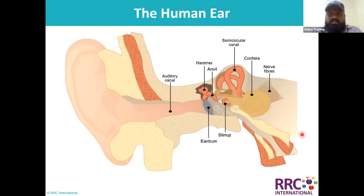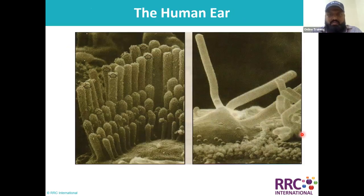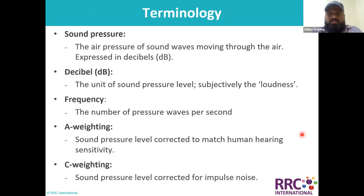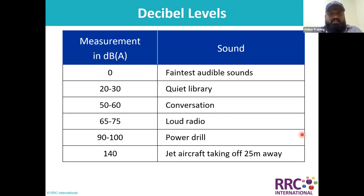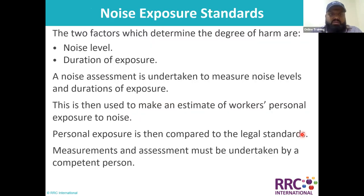We had seen how our sense of hearing works and how it gets damaged. Then we discussed different terminologies including sound pressure, decibel, frequency, A-weighting and C-weighting which is impulse noise.